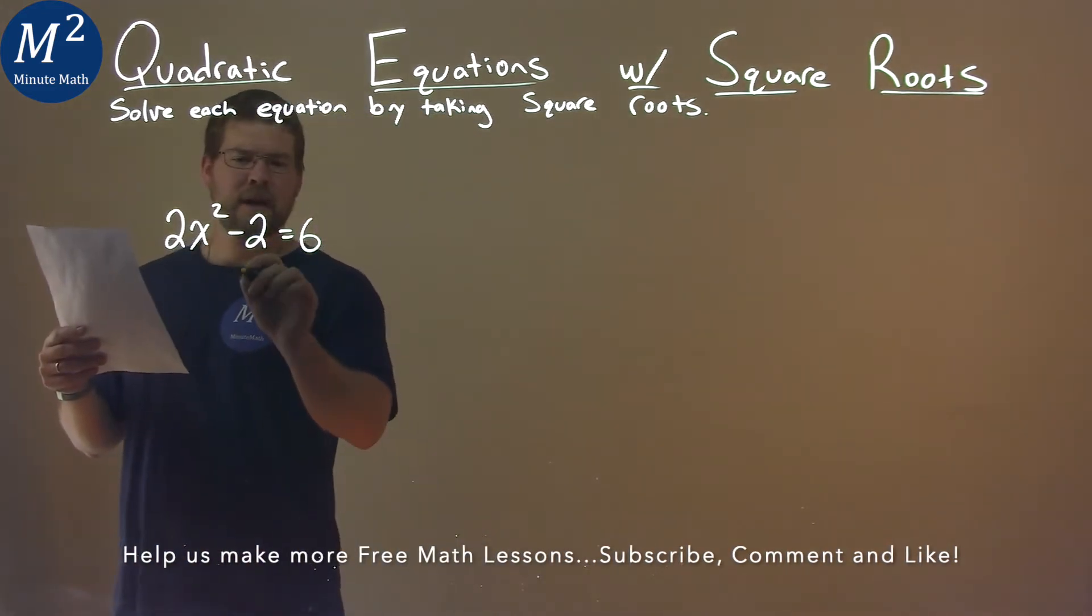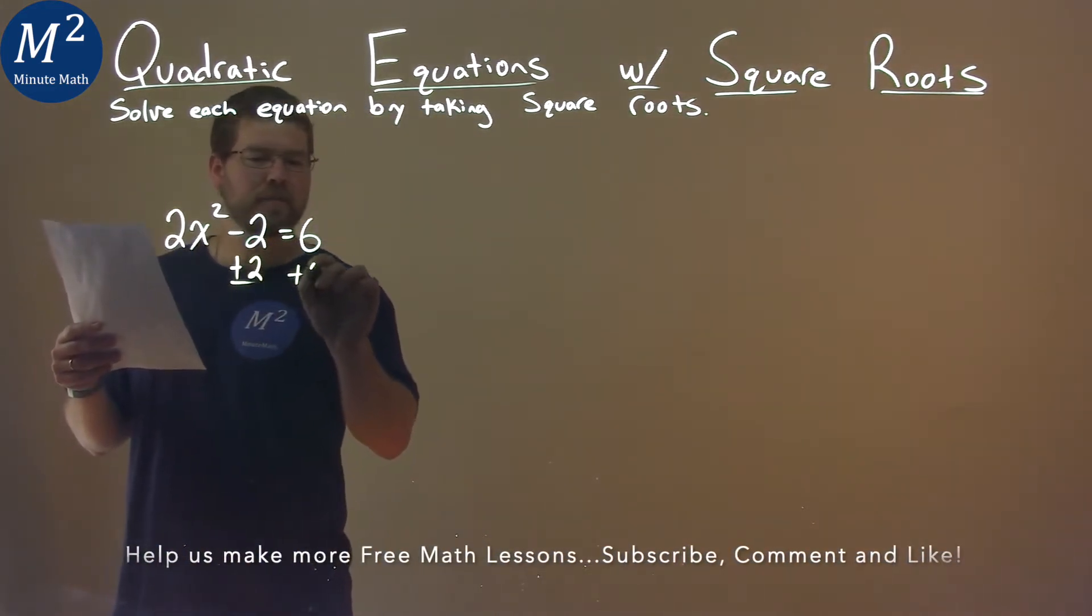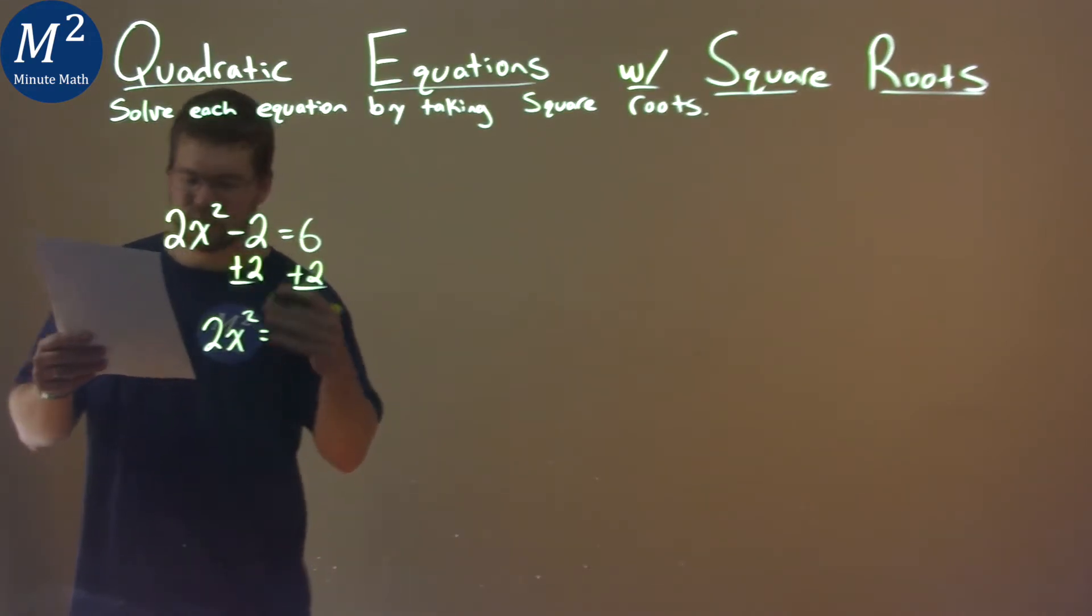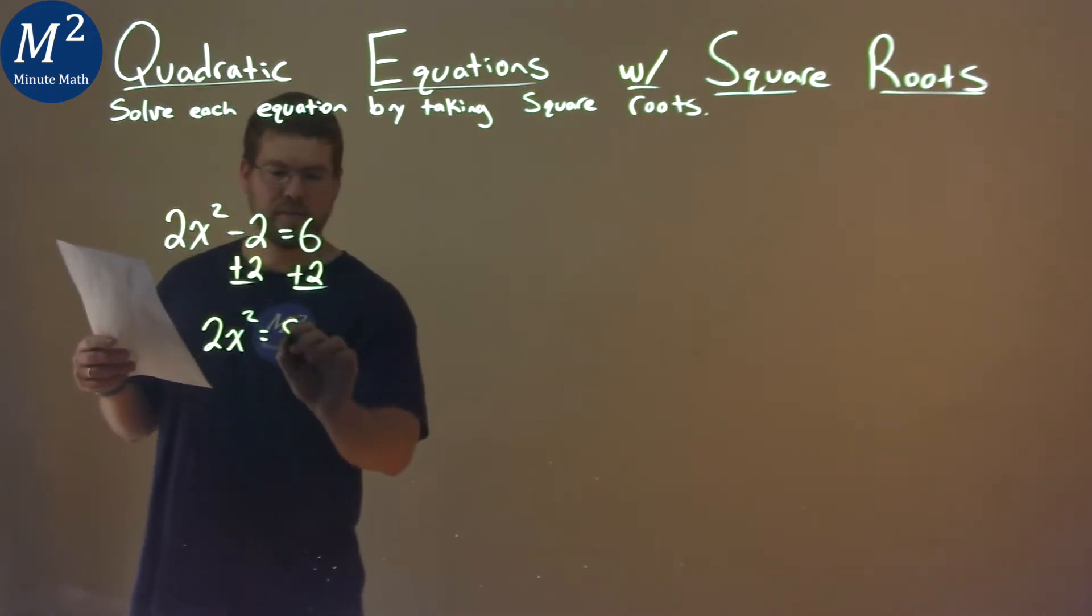First thing I'm looking at here is I'm going to add a 2 to both sides. Again, the goal is to get x by itself. So 2x squared equals 6 plus 2 is 8. Not too bad.